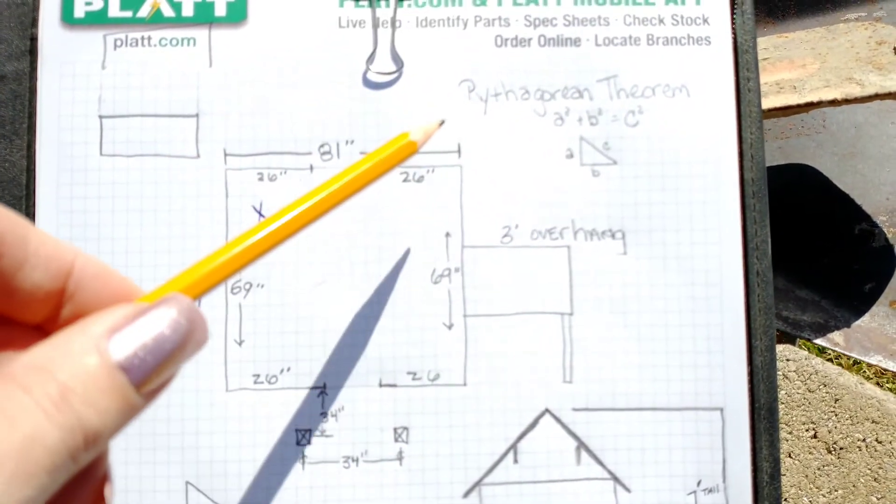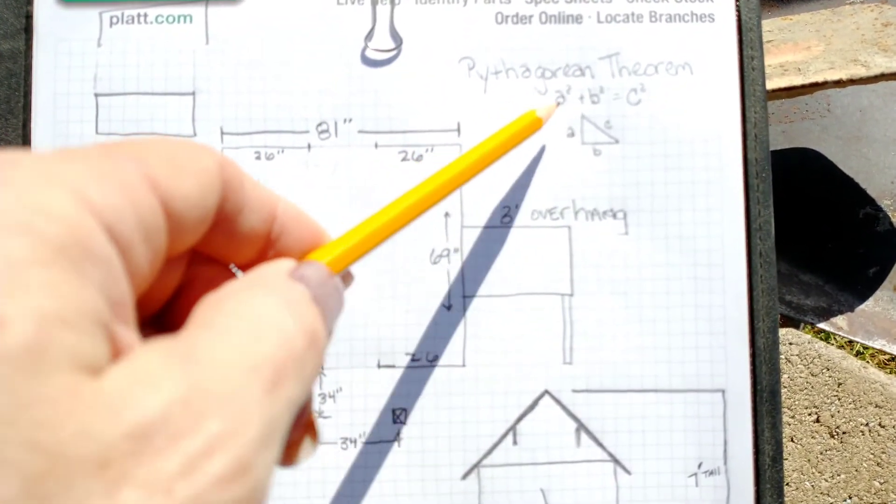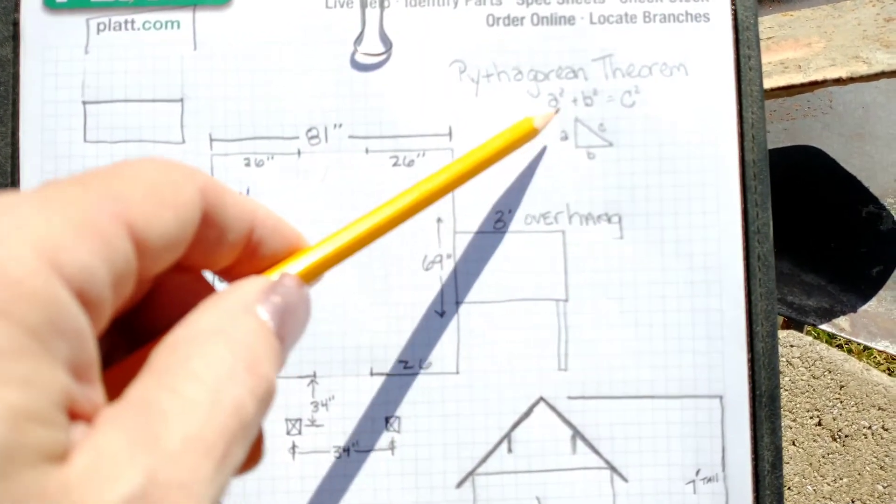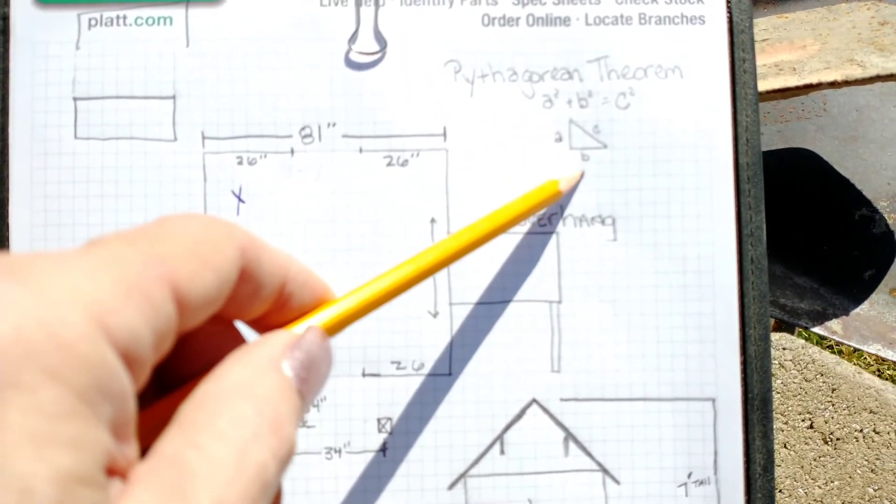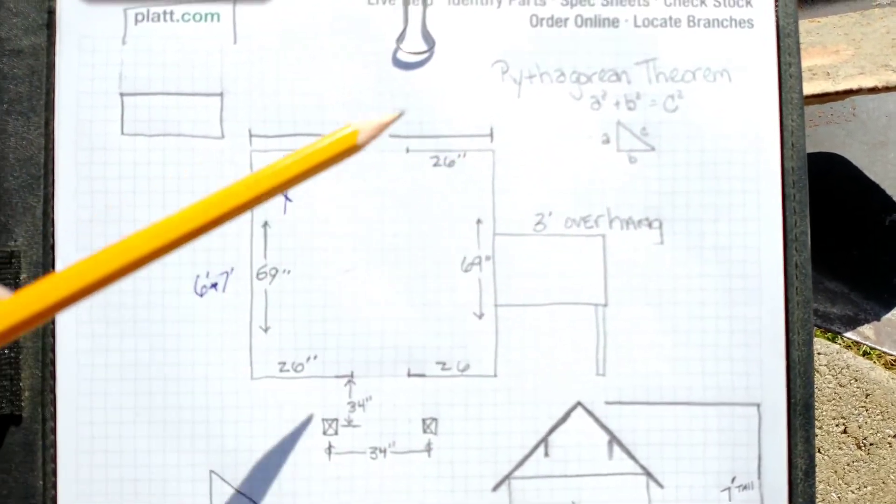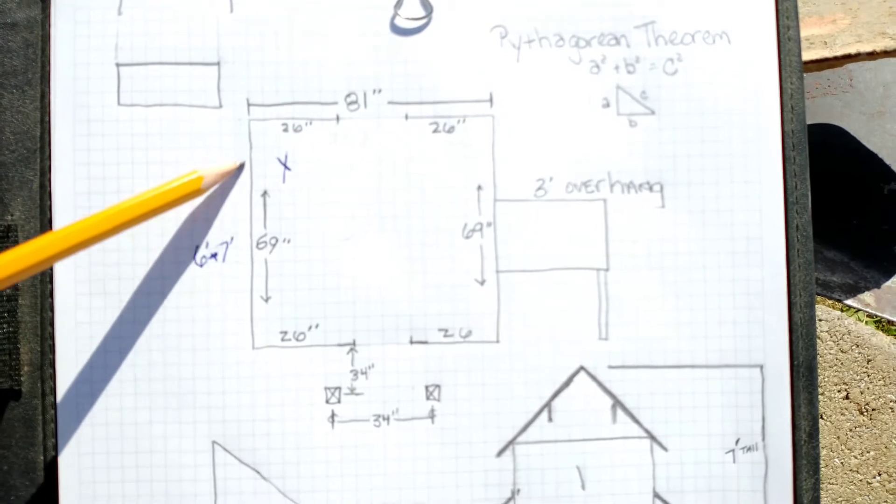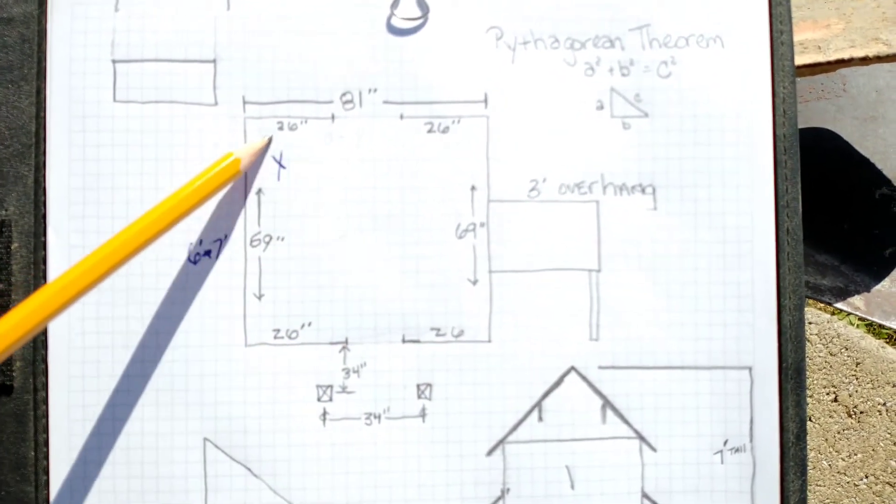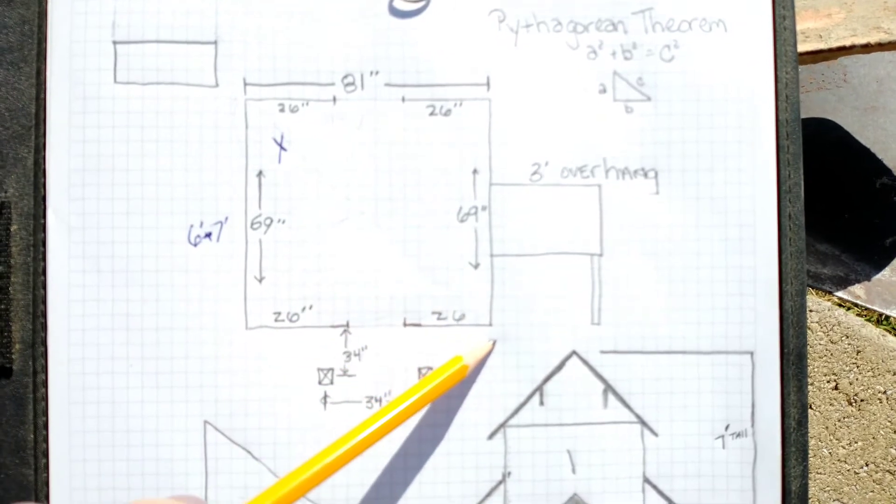So you have the Pythagorean Theorem right here which is A squared plus B squared equals C squared. So if you look at a triangle you have A on one side, B on the other and then your hypotenuse is called C. So over here you have your A here, your B going across and then your C hypotenuse going that way.